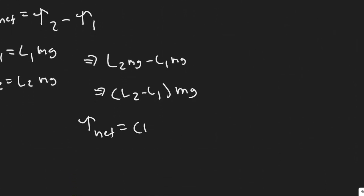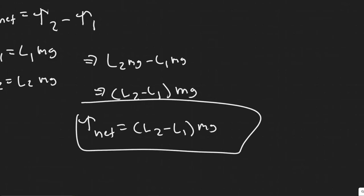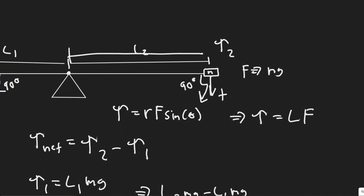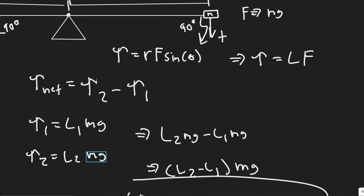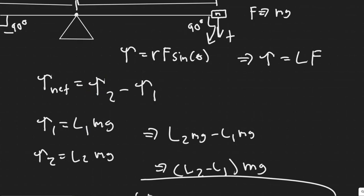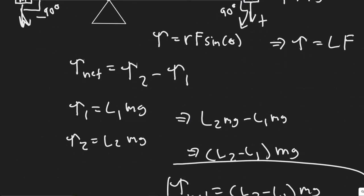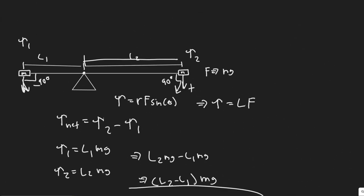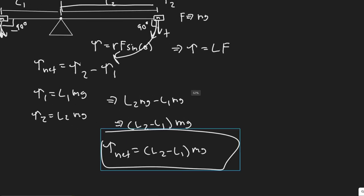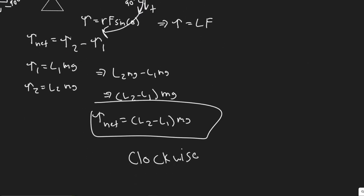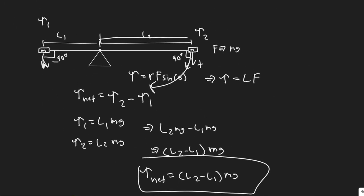The magnitude is (L2 minus L1) times mg. For the direction: we know the torque for L2 is going to be greater because L2 is much greater than L1, so the only thing changing these torques is their distance. Since the torque due to mass 2 is greater, it's going to go clockwise. The positive value confirms this — positive indicates clockwise direction.